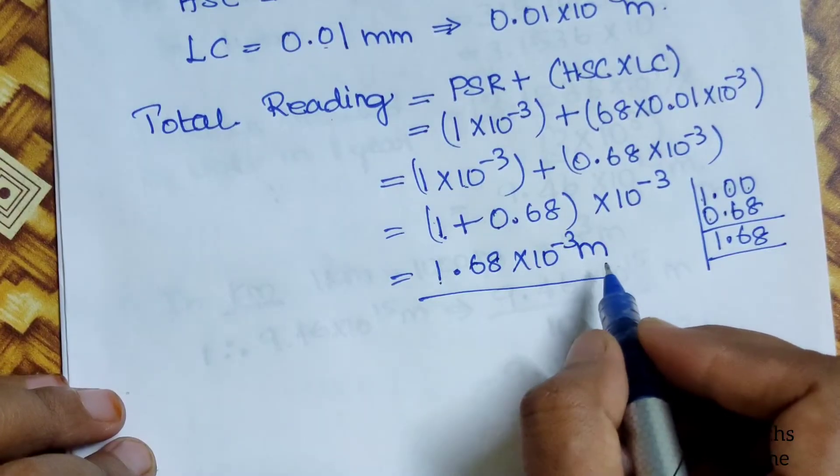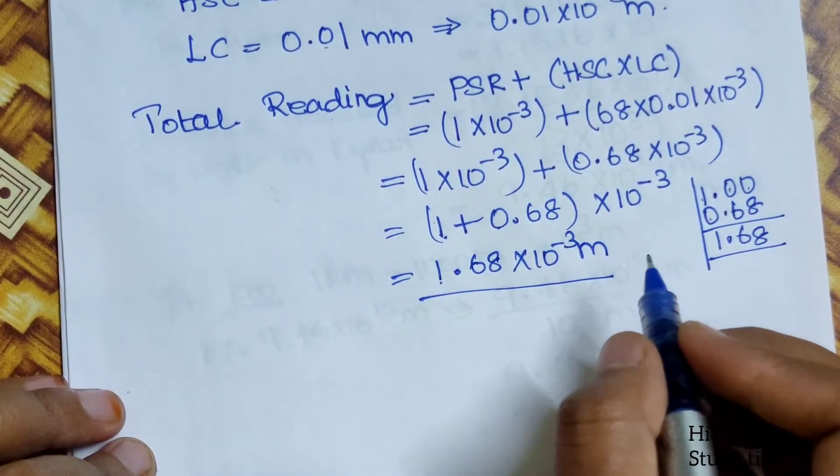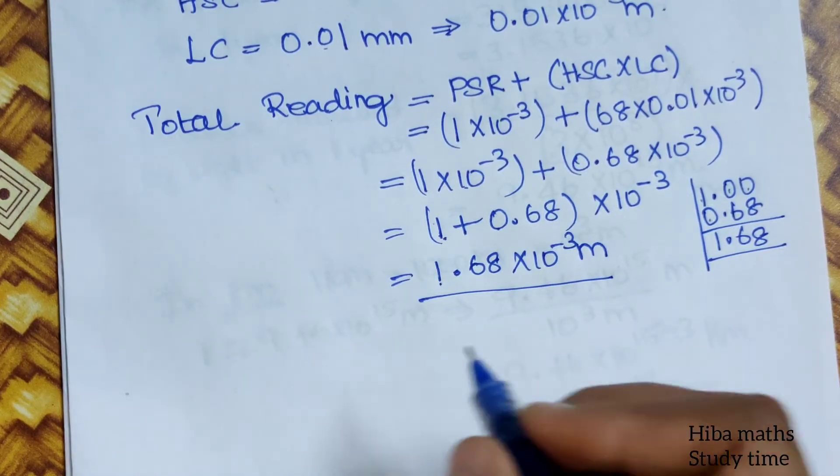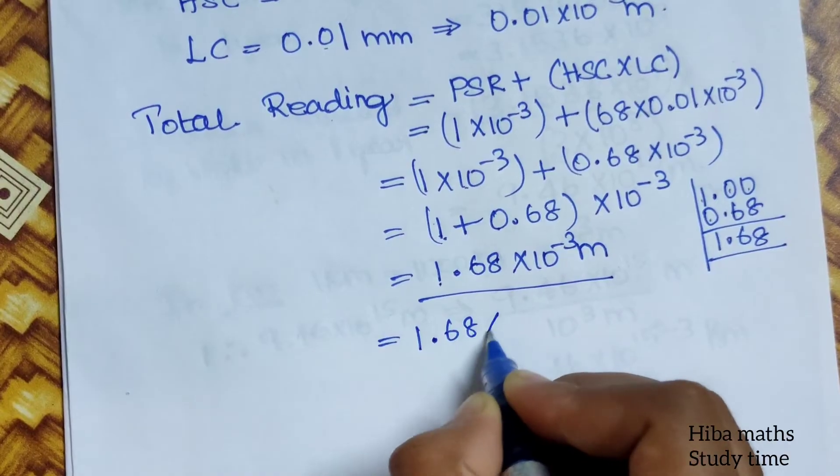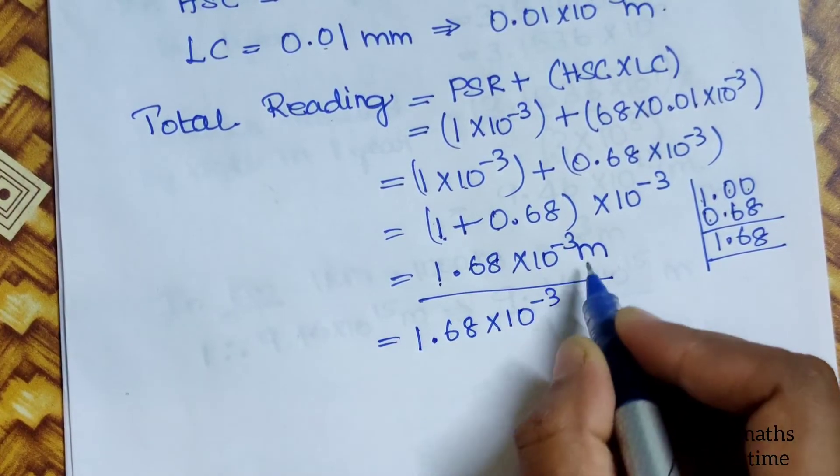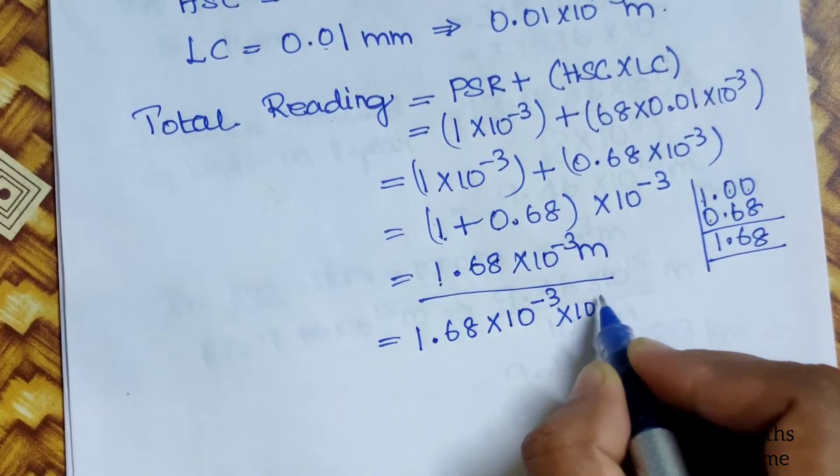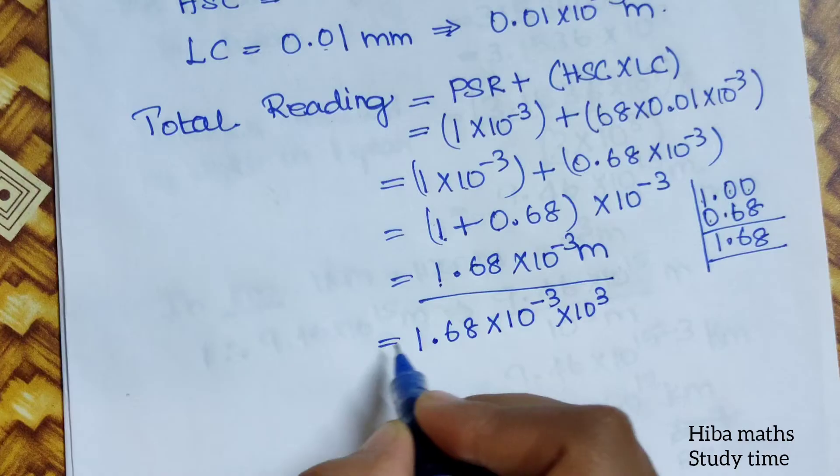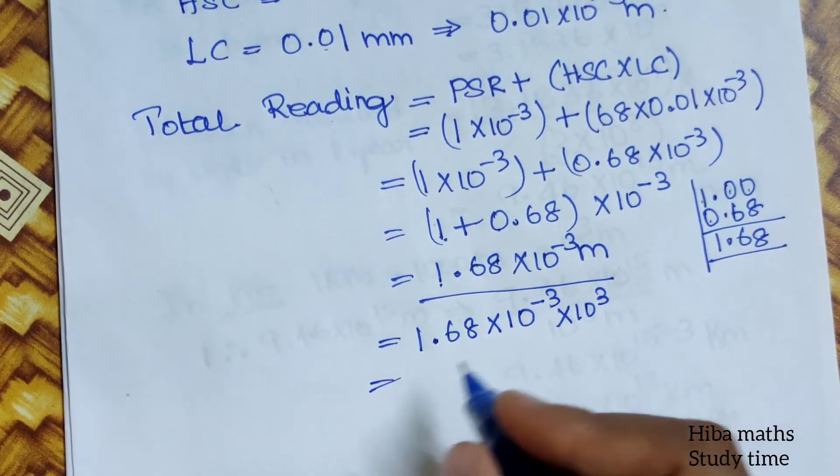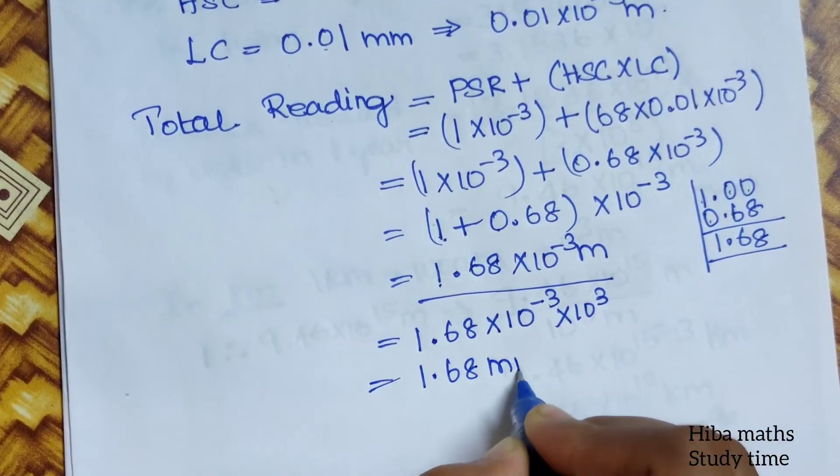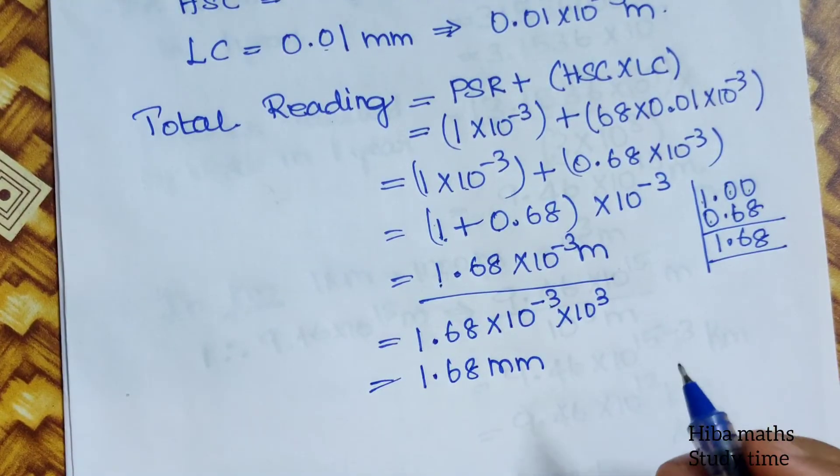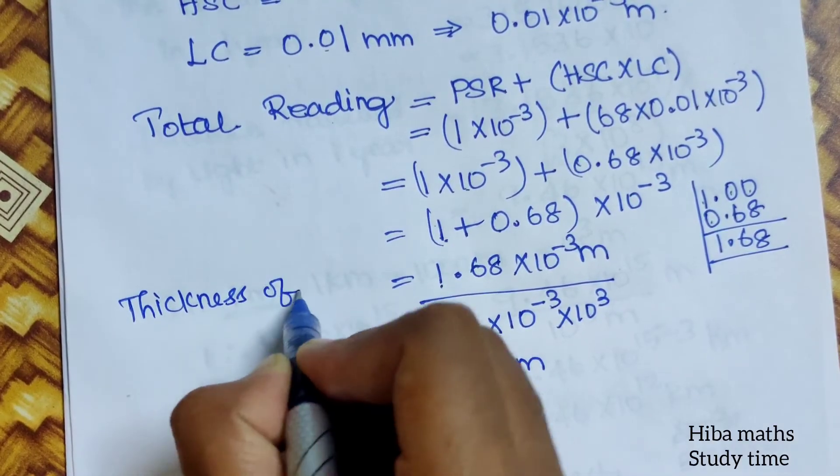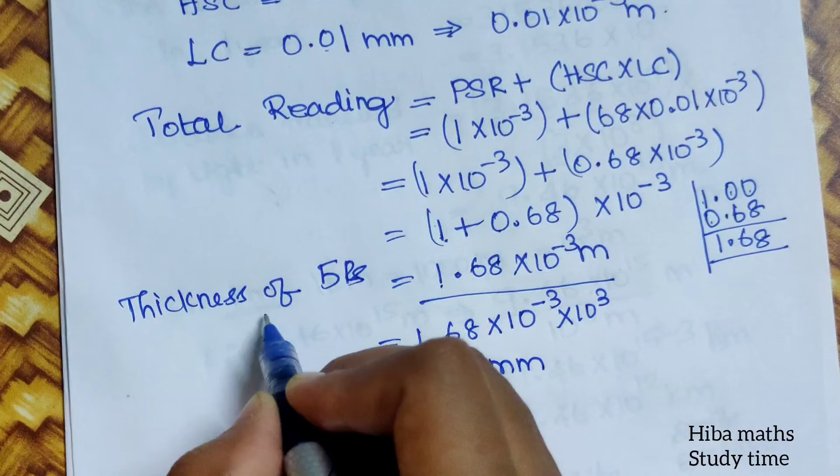Now the total reading is meter, but the question is millimeter. So this term is millimeter. 1.68 into 10 power minus 3 millimeter into 10 power 3. 1 meter is 1000 millimeter. So total reading is 1.68 millimeters. So this is thickness of 5 rupees coin.